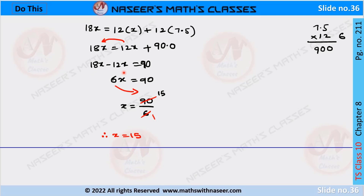18x minus 12x is written as 6x. Now we transpose 6 from LHS to RHS. We get x is equal to 90 by 6. We cancel 6 ones are 6 and 6 fifteens are 90. Therefore we get x is equal to 15.